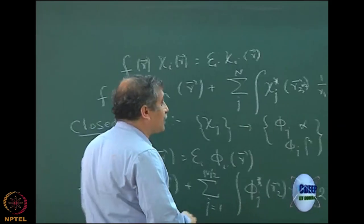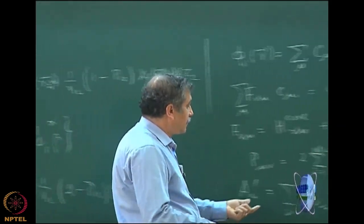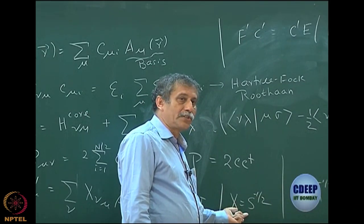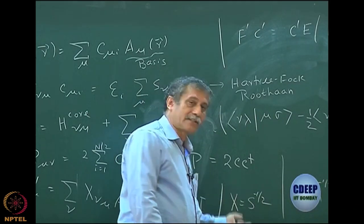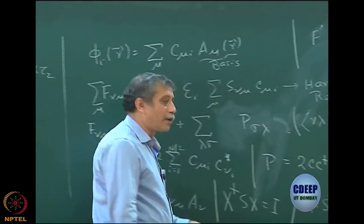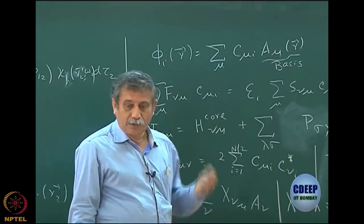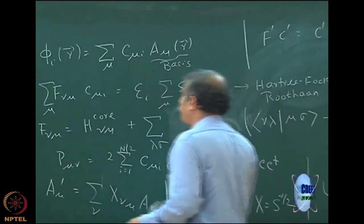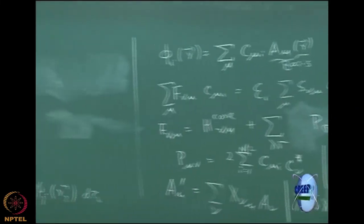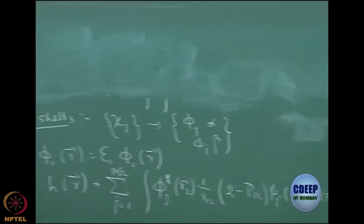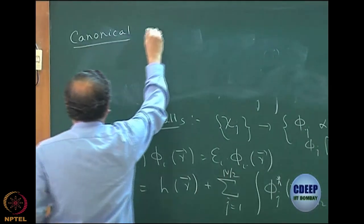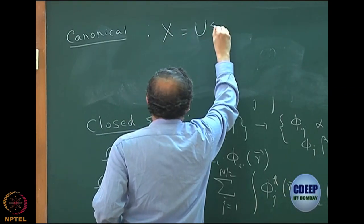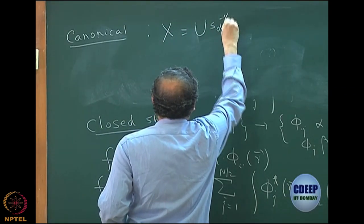I also mentioned that there is another orthogonalization procedure. This first one is symmetric orthogonalization (Löwdin); the other is called canonical orthogonalization. It is important to understand what canonical orthogonalization is, so I will spend a few minutes on it. For canonical orthogonalization, we use x equals U times S_D to the power minus half — that is it.